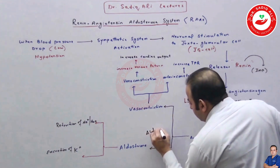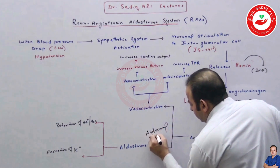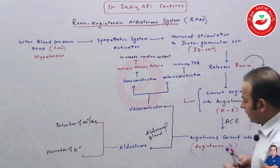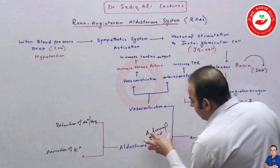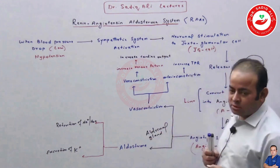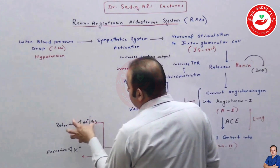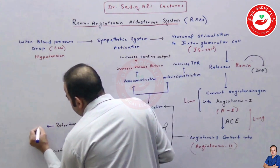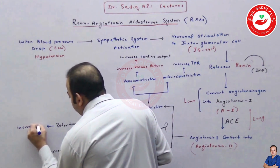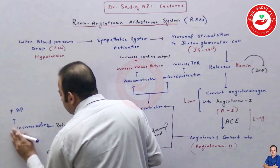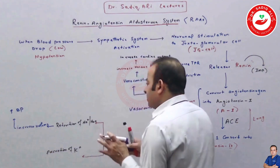Angiotensin 2 also travels to the adrenal gland, where it activates the zona glomerulosa of the adrenal cortex to release aldosterone. Aldosterone is a hormone that promotes retention of sodium and water. When retention of sodium and water occurs, there is increased blood volume, which increases blood pressure. However, aldosterone also causes excretion of potassium out of the body.